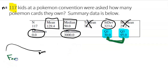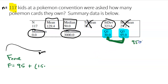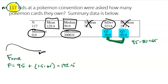First, we'll use the fence method. The upper fence is Q3 plus 1.5 times the IQR. The IQR is Q3 minus Q1, so 95 minus 30 gives an IQR of 65. So we calculate 95 plus 1.5 times 65, which gives us 192.5. Now we go back and look at our 117 kids: does anyone have more than 192.5 Pokemon cards? The kid with 3,000 is definitely an outlier — way more than 192.5.